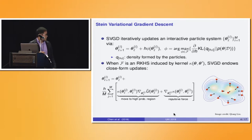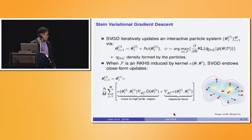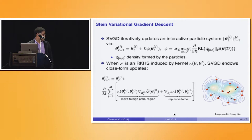In SVGD, phi is defined as a function such that it maximally decreases the KL divergence between q and the posterior P(theta|D), where q is the density formed by the particles in the next iteration. This phi is restricted to a class of functions, and when defined as an RKHS induced by a kernel k, the phi function in SVGD has a closed-form solution.